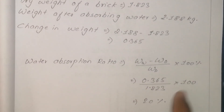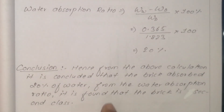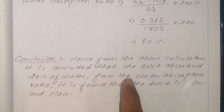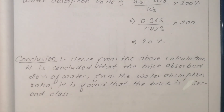The result is 20%. From the above calculation, it is concluded that the brick absorbs 20% of water. From the water absorption ratio, it is found that the brick is a second-class brick, since first-class bricks absorb no more than 15% water.